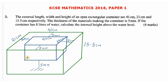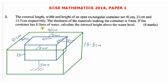We can also determine the height of the internal part. For the height, we only have the 5 millimeters thickness at the bottom, because the container is open at the top — so there is no extension of 5 millimeters there. The internal height is the external height of 15.5 centimeters minus 0.5 centimeters (which is 5 millimeters), giving us 15 centimeters for the internal height.